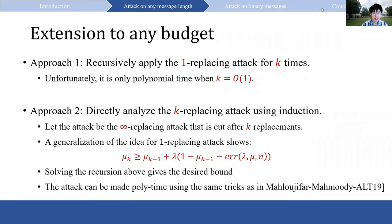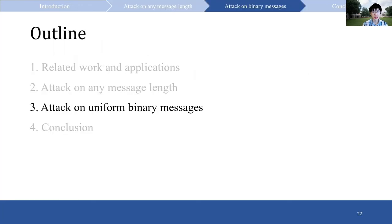We now extend the k equals 1 result to any k. The first approach is to recursively apply the one-replacing attack k times, but this is only polynomial time when k equals 1. A second approach achieves a slightly weaker but polynomial time bound by carefully applying induction. Let the attack be the infinity-replacing attack cut after k replacements. A generalization of the one-replacing attack idea shows mu_k ≥ mu_{k-1} + lambda · (1 − mu_{k-1}) · ERR, and solving this recursion gives the desired bound. The attack can be made polynomial time using the same trick as in the Mahaloudjifar-Mahmoudi R19 paper.